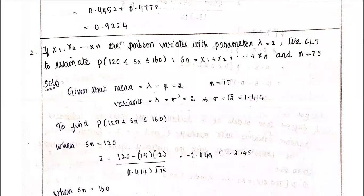For Poisson distribution, the mean is λ and variance is λ². So μ equals λ and σ² equals λ. We will use μ and σ² as our parameters.